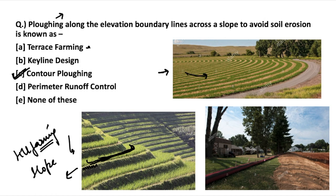Another method is key line design, which I will discuss in the next question. Let's discuss perimeter runoff control. Around the perimeter of the farmland, trees or shrubs are used so that the surface friction from runoff of water or wind can disperse the runoff and reduce wind erosion. This is known as perimeter runoff control.